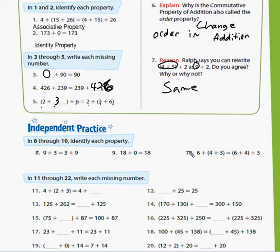And in 11 through 22, write the missing numbers. So very similar, it's just like the problems that we did in one through five on the guided practice. Let's go and look at the back side. We'll do a few of these ones on the back side together.